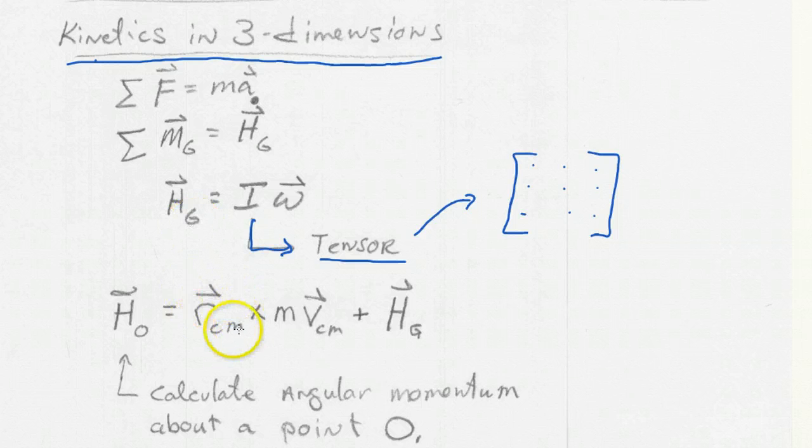We also had this equation that could calculate the angular momentum about a point. So we wrote this down. And this was quite useful. So the angular momentum about some point that's not at the mass center, so G is the mass center,